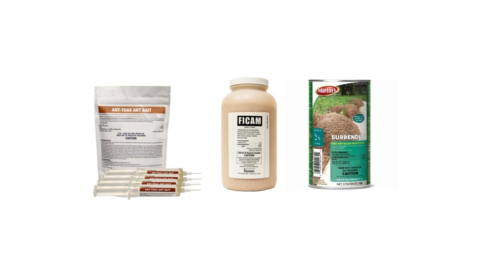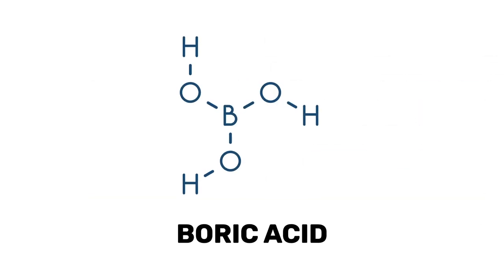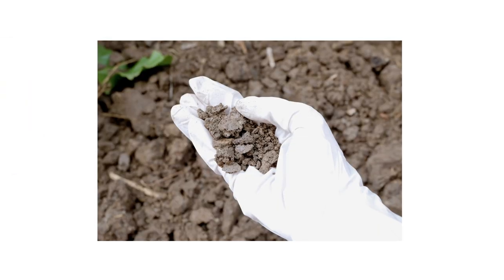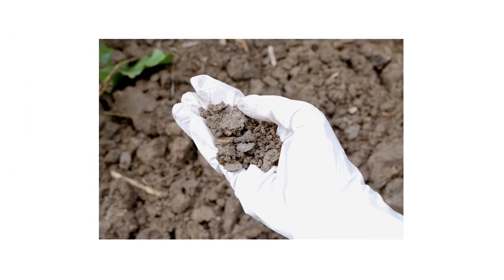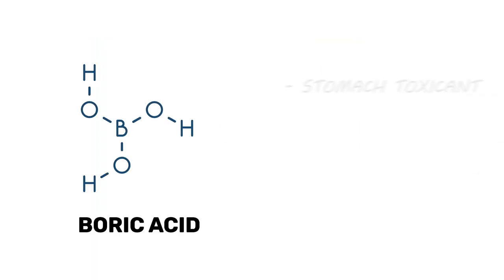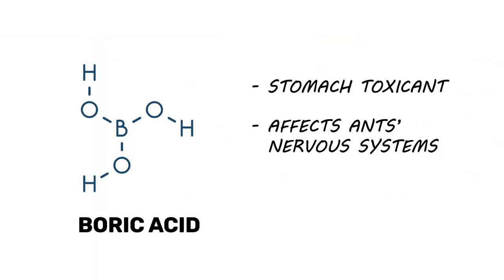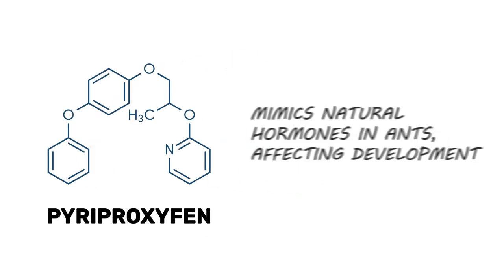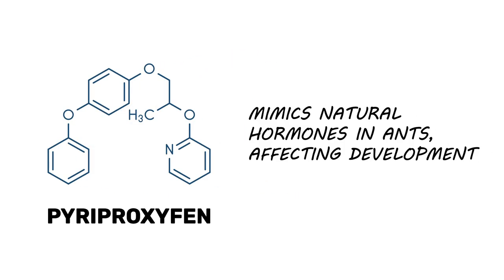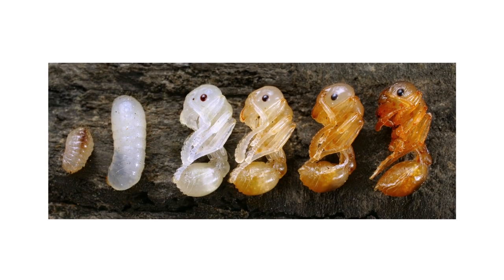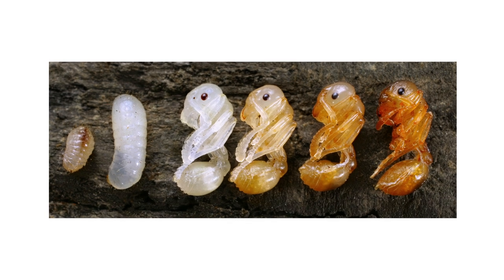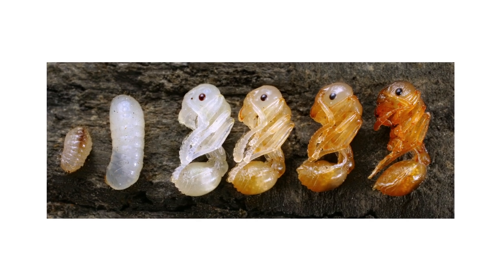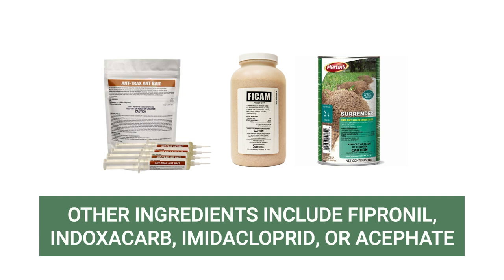Look for a product's active ingredient on its label to learn more about how each product should be used and how it can lead to total elimination. Boric acid is the most common active ingredient in ant baits — a naturally occurring chemical found in soil, water, and plants. It functions as a stomach toxicant, hinders the ant's central nervous system, and harms the exoskeleton. Pyriproxyfen is a broad-spectrum insect growth regulator that mimics natural hormones in ants and disrupts their growth. It doesn't directly kill ants but stops immature ants from developing into reproductive adults and stunts the queen's ability to lay eggs, halting future generations. Other active ingredients include fipronil, indoxacarb, imidacloprid, and acephate.